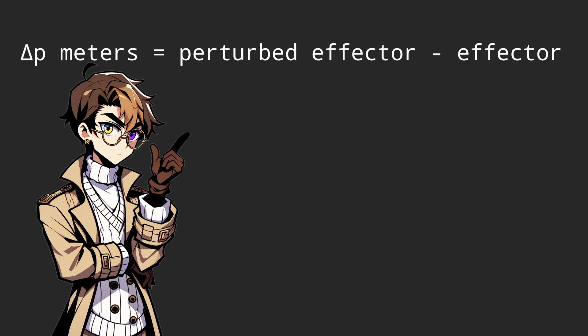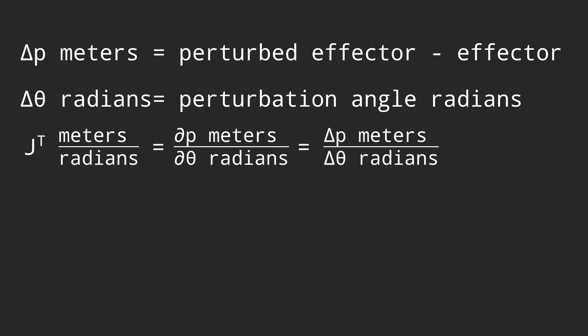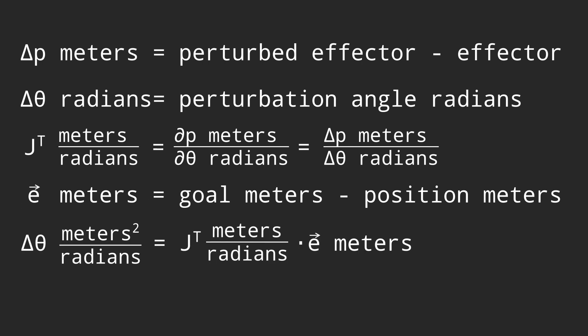When we calculate the perturbed effector position minus the effector position, the result is in meters. Then to get the partial derivative, we divide it by the small angle we perturb the joint by. So the unit of the derivative is meters over radians. And the error we multiply by is a position minus a position. It's also in meters. So when we multiply them together, the result should be in meters squared over radians. So how does this help us? How can we add this to an angle?